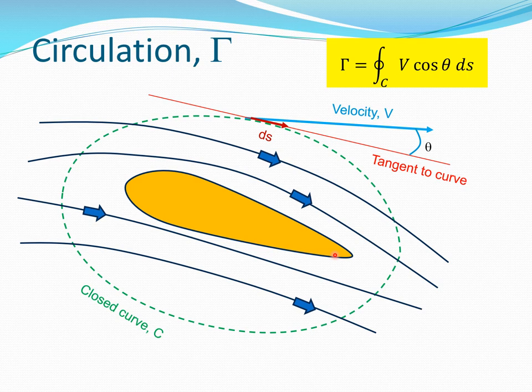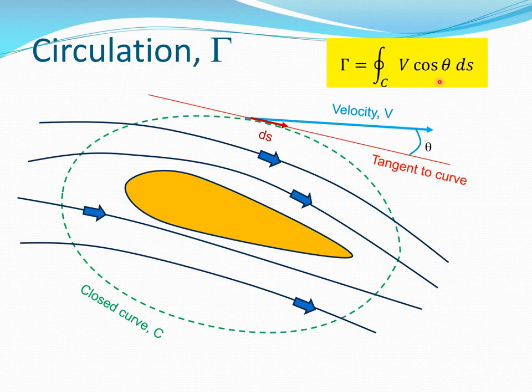Before we start, we need to introduce what circulation is. Circulation is typically given by the Greek letter gamma. If we take an airfoil section and consider a closed curve C around it — shown in green — there is a flow taking place around the airfoil. At a point on the curve, we take a tangent; the velocity is shown in blue, and the angle between the tangent and the velocity is theta. Taking a small increment of distance ds along the closed curve, circulation is defined as the closed integral around curve C of V cos(theta) ds.